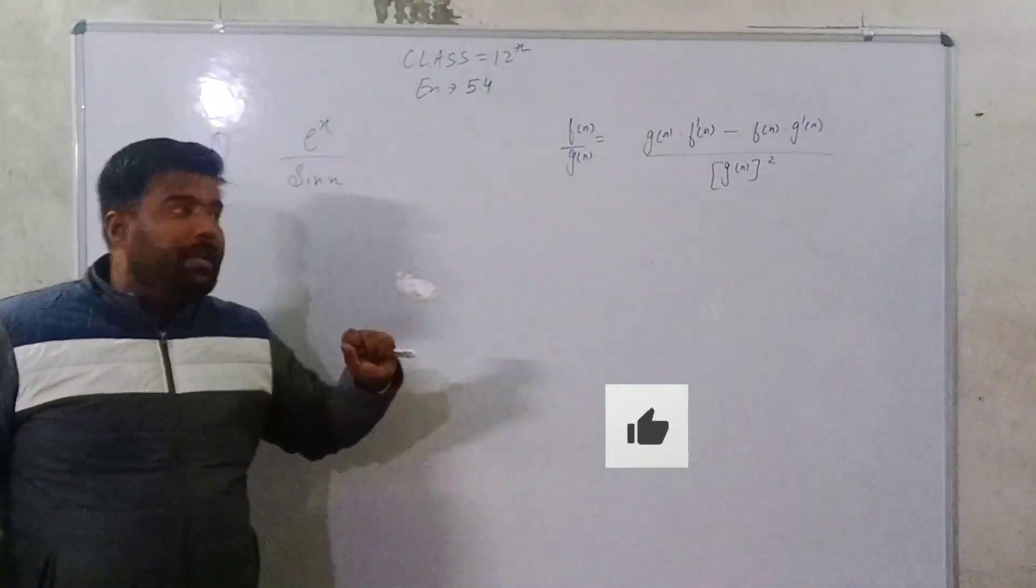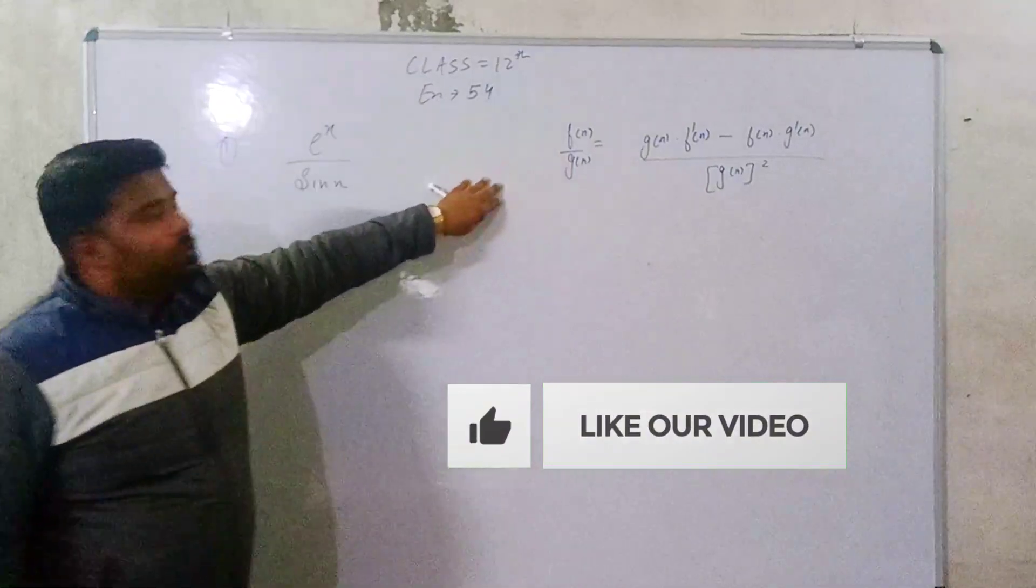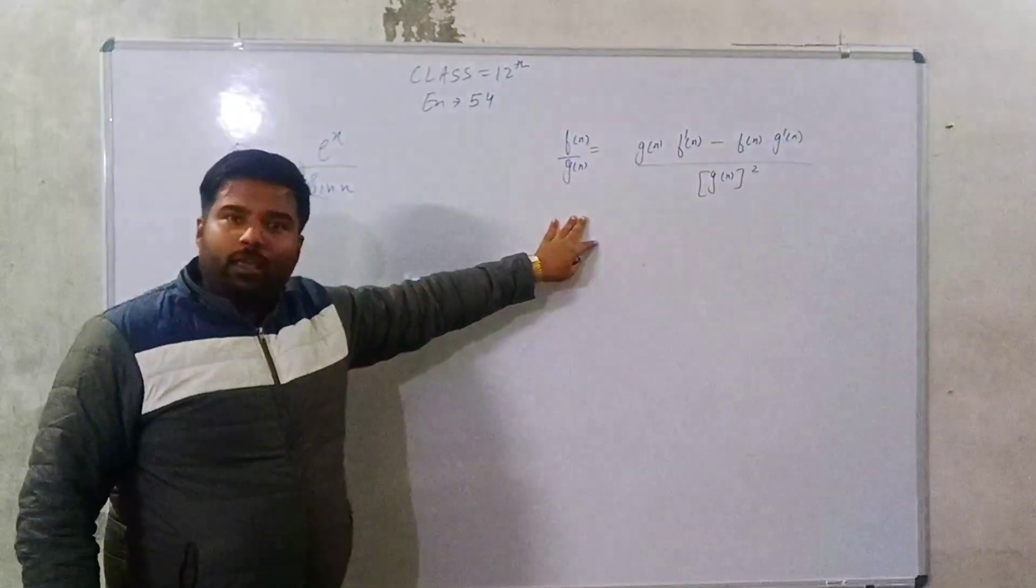This is our exercise first question. The exercise first question is that there are identities used which I have written here.